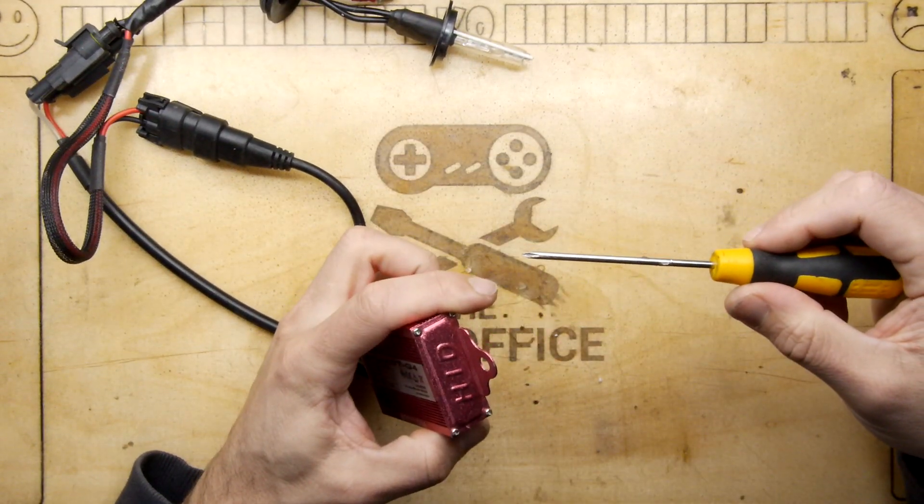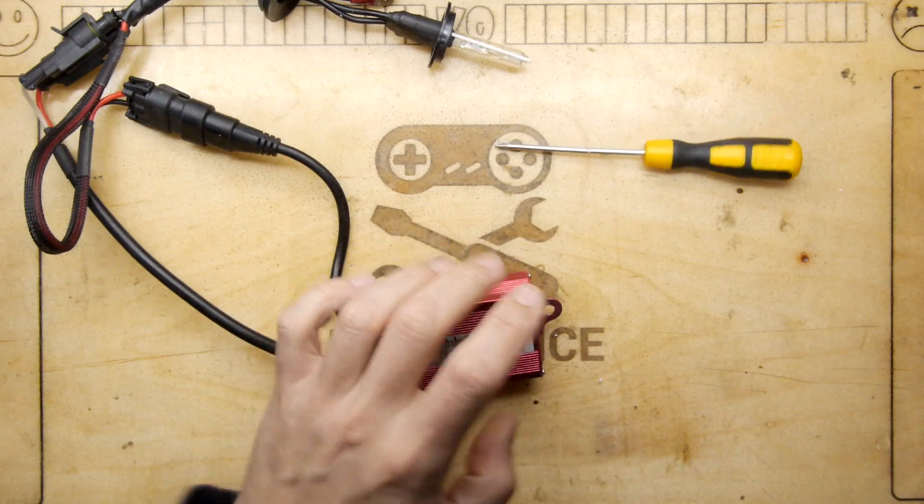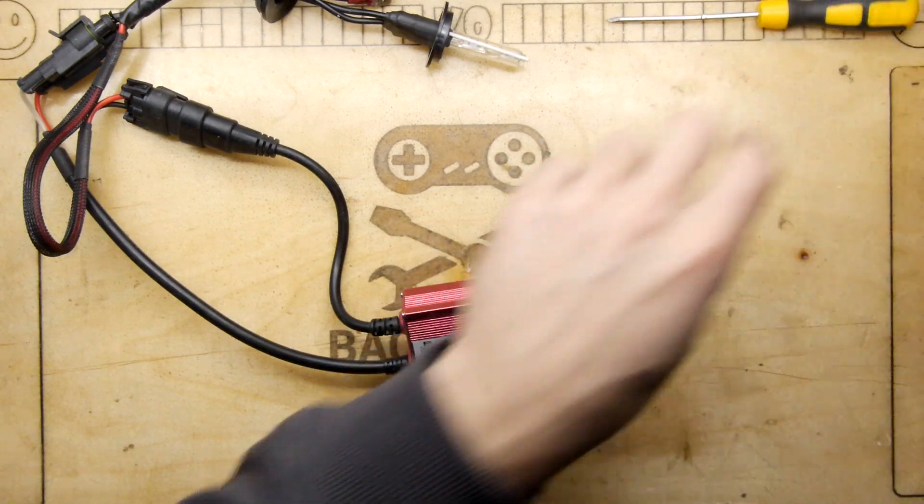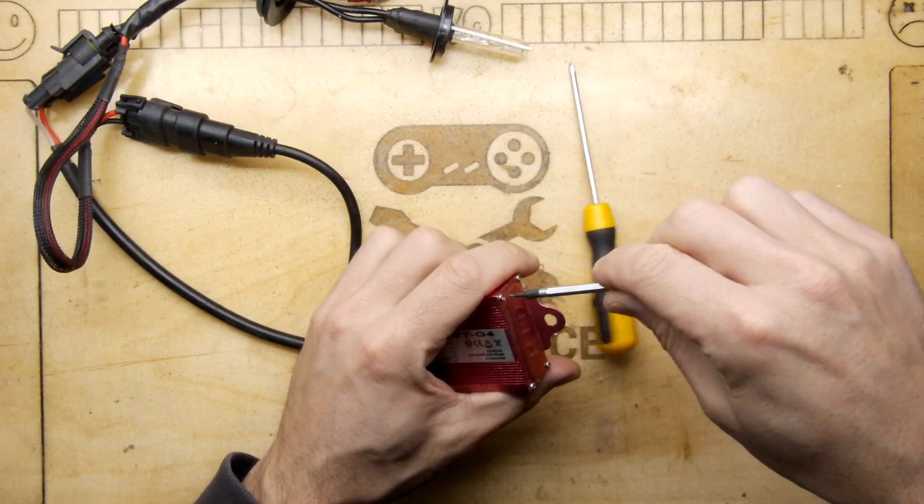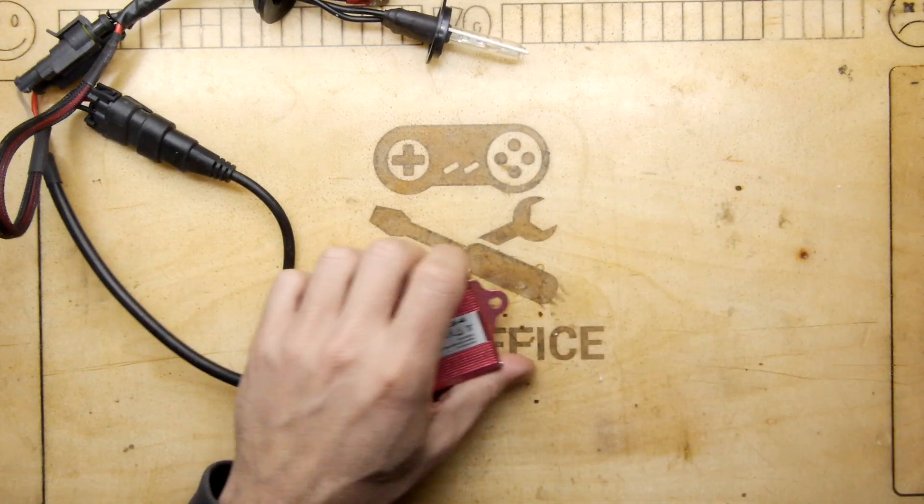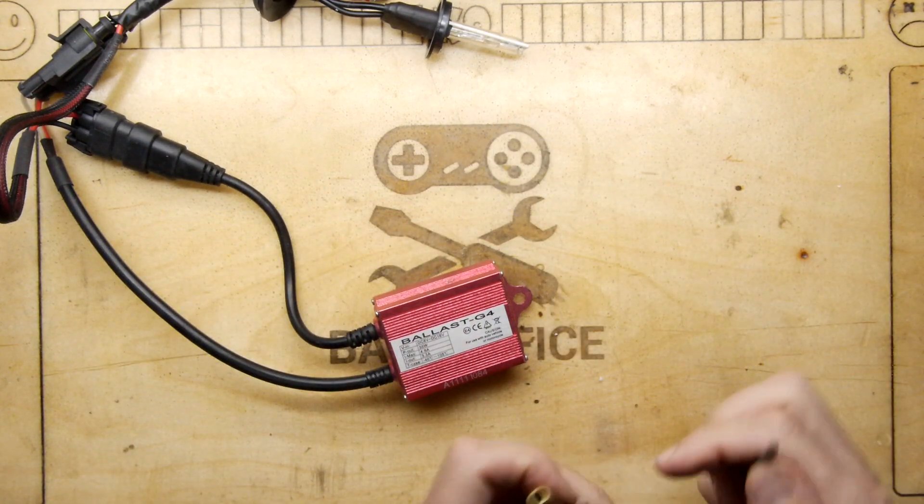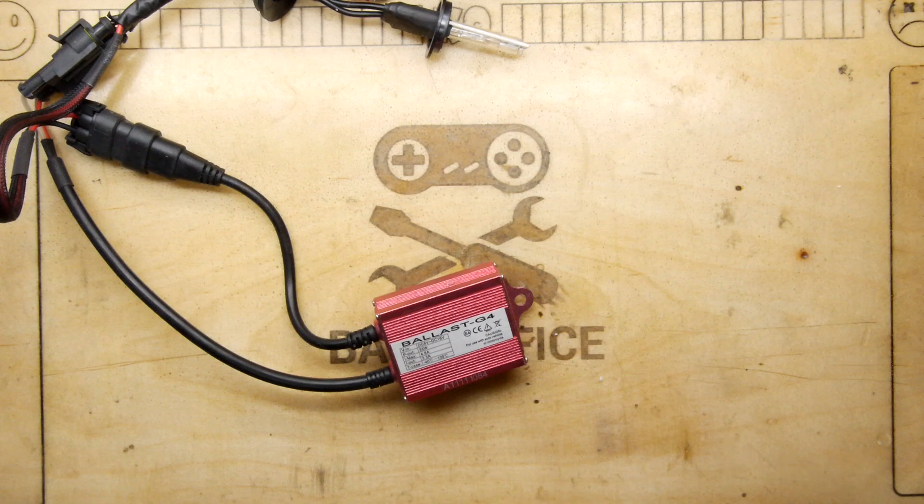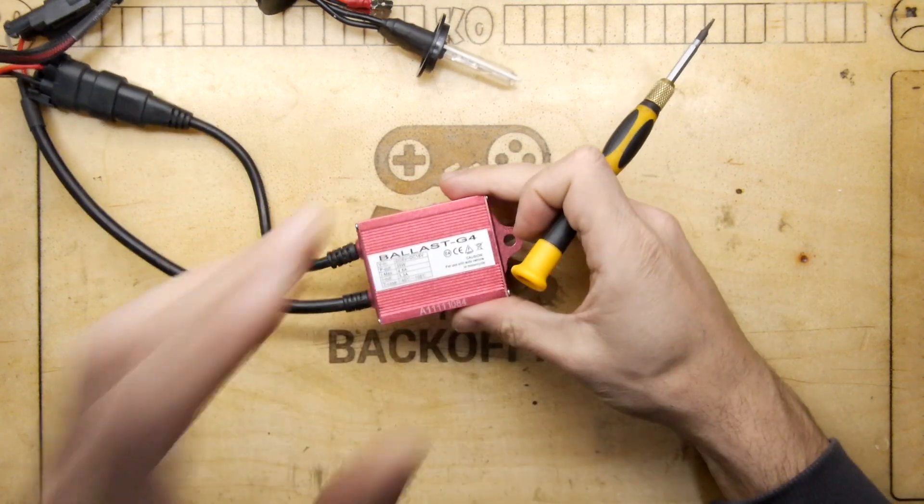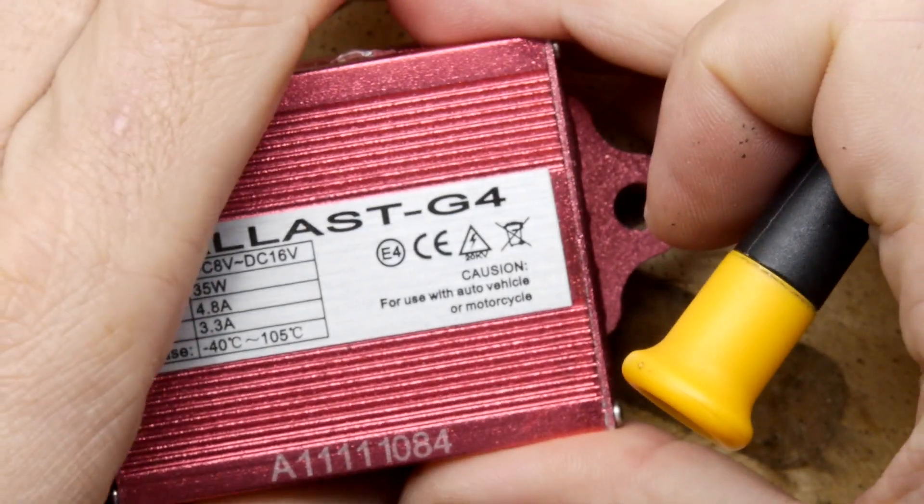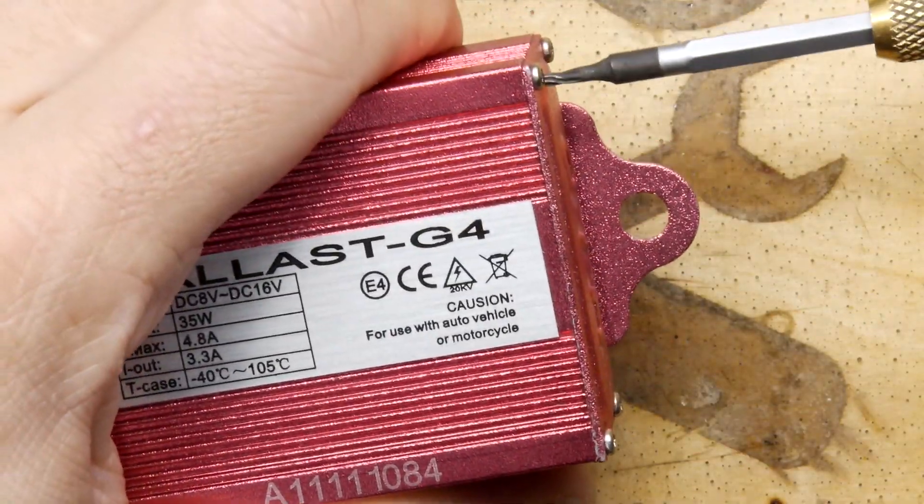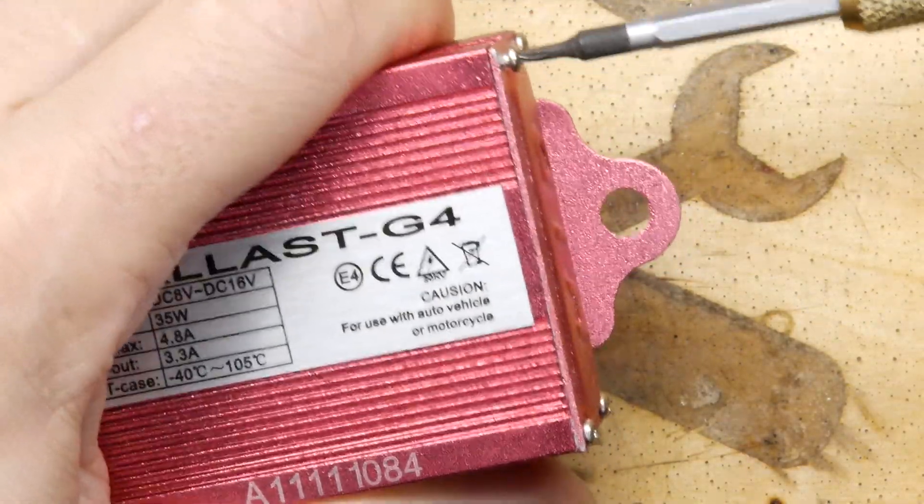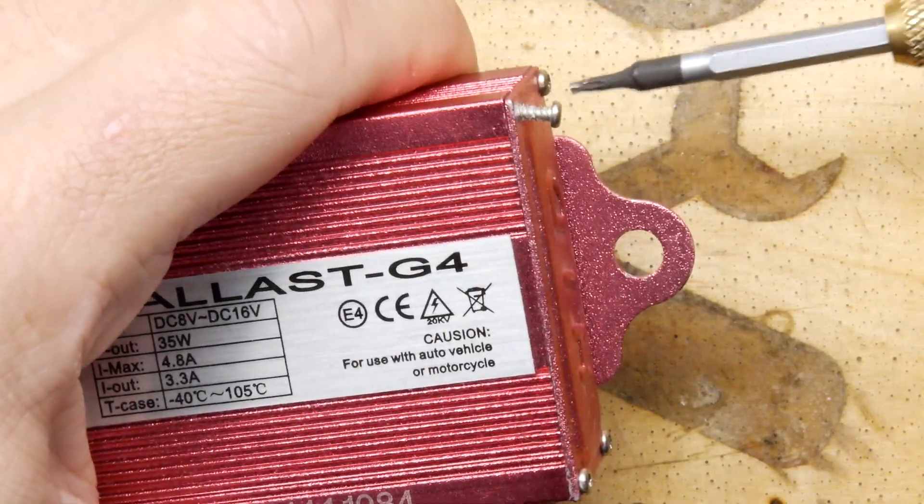Let's have a look inside at what this does. Oh gosh, always with the fancy screws - they don't want you to take it apart, but I do like the enclosure. Ballast G4, caution spelled wrong: C-A-U-S-I-O-N. Caution, you need to be cautious.